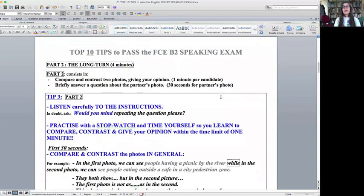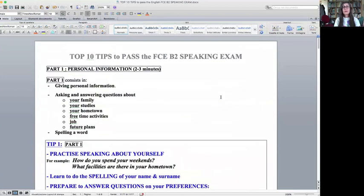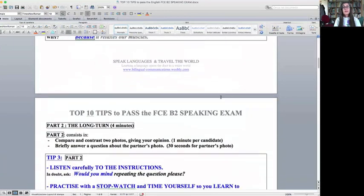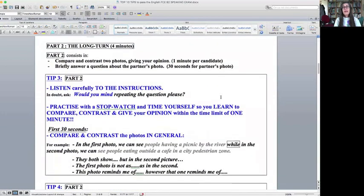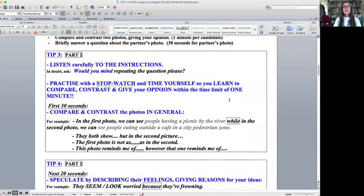So part one is over. I forgot maybe to mention that yes, part one lasts two to three minutes. Then there is part two, which is often called the long turn. The total exam of part two is four minutes, but it's divided between you and your partner. So part two consists in comparing and contrasting two photos, giving your opinion. You've got one minute to do that each, and then briefly answering a question about your partner's photo, and that's only 30 seconds.